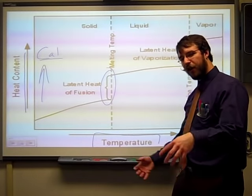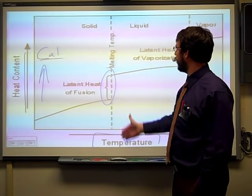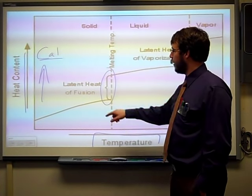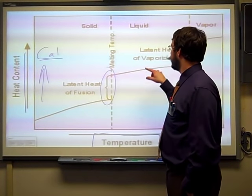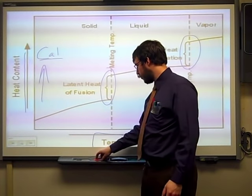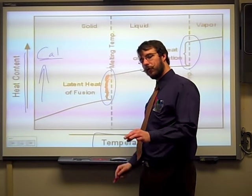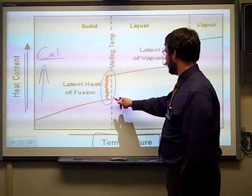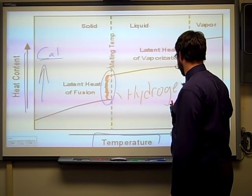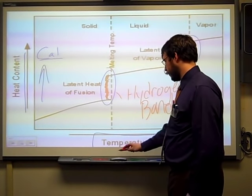And then we hit this area right here. This is called the latent heat of fusion. And it actually goes across the melting temperature, which is also known as the freezing temperature. It's the melting point. This is where it goes from solid to liquid. You can see that the temperature stays the same. While we're adding more heat, the temperature stays the same. You're adding more heat, but the water molecules actually don't move any faster. And these areas of latent heat are due to hydrogen bonding.